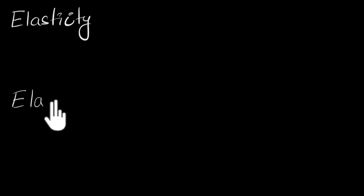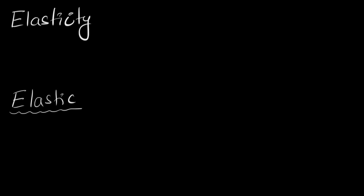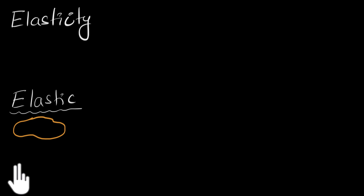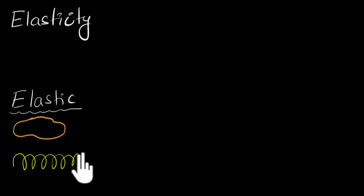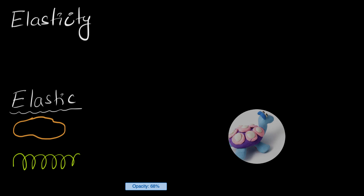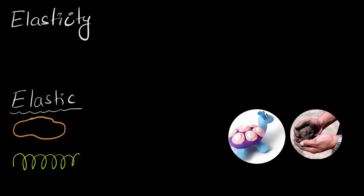Let's write down examples of elastic materials. Things like a rubber band — so rubber — or maybe a spring, these are elastic in nature. And things which are not elastic, well, you probably know them as well. For example, clay. Clay is pretty non-elastic. Mud — these are some examples of non-elastic materials.